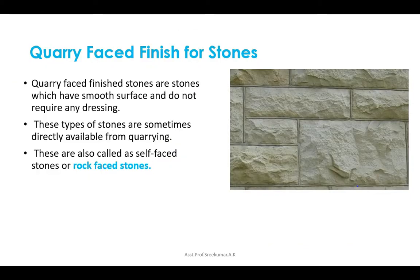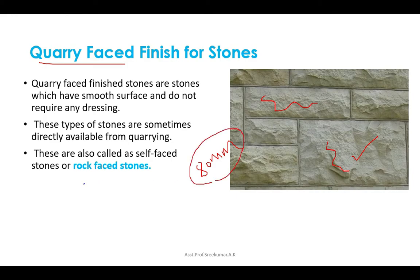The first type is the quarry faced finish. In this type, the exposed face of stone is not dressed but is kept as such. Projections exceeding 80 mm are removed by light hammering. These stones are sometimes directly available from quarrying and are also called self-faced stones or rock-faced stones.